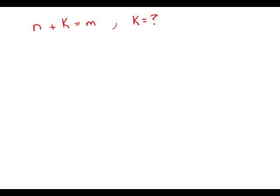If n plus k equals m, what's the value of k? We'll notice we could solve this equation by subtracting n from both sides and we get k equals m minus n. So one way to get sufficient information is if we found out both the value of m and separately the value of n.